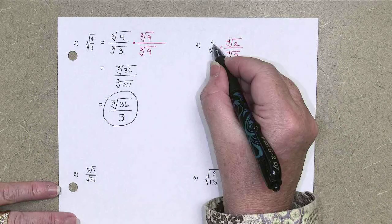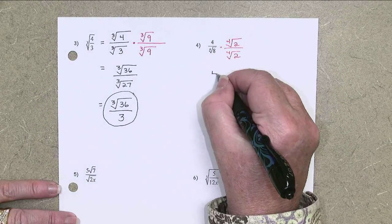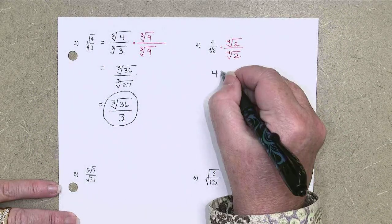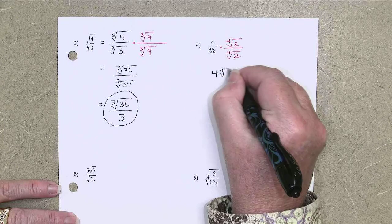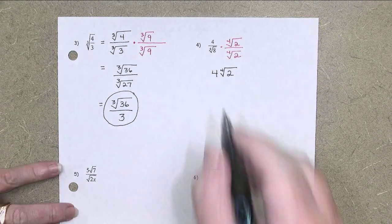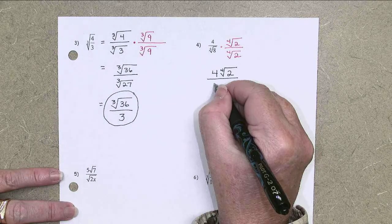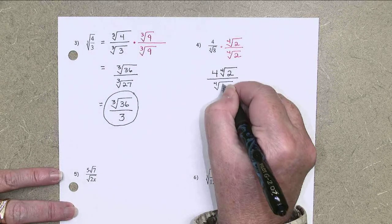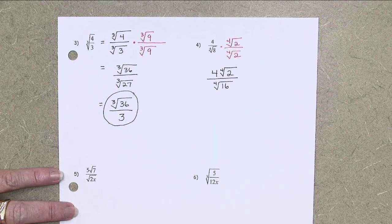On the top, the 4 has to stay outside the radical. So we're going to write that as 4 times the 4th root of 2. Can't multiply them any more than that. But the bottom is the 4th root of 16, which is 2.